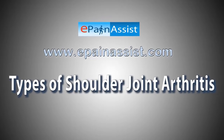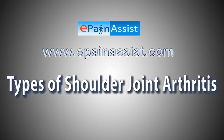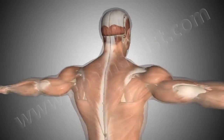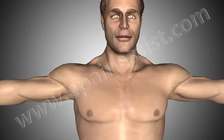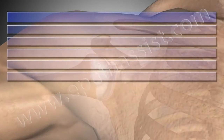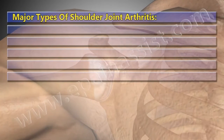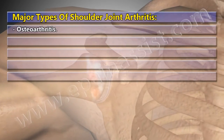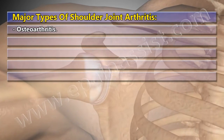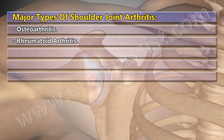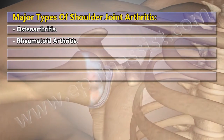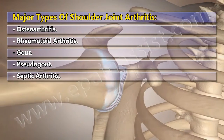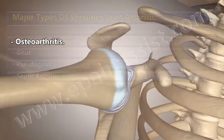Types of Shoulder Joint Arthritis. The major types include Osteoarthritis, Rheumatoid Arthritis, Gout, Pseudogout, and Septic Arthritis.